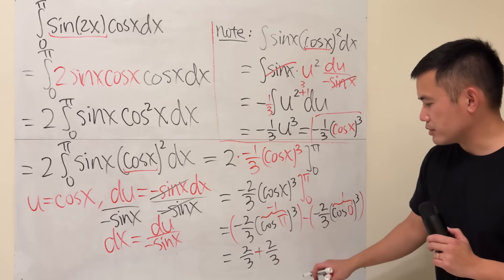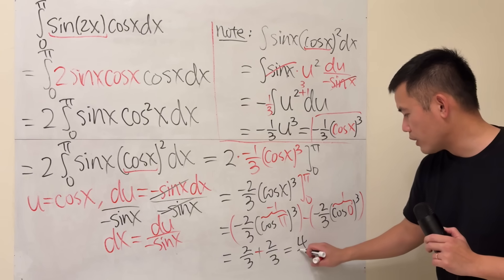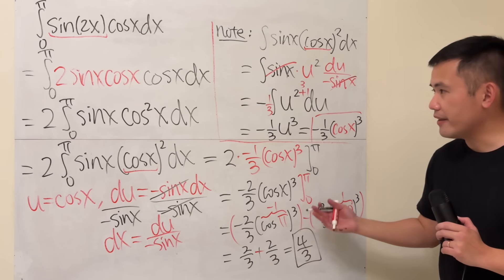So finally, 2 third plus 2 third, we end up with 4 third. And that is the answer.